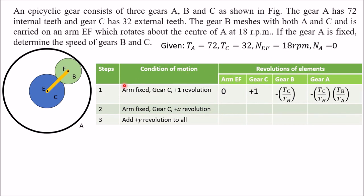We prepare a table with three steps: condition of motion and revolutions of elements. The first column must always be the arm. After that, start from one gear and write the meshing gear in the adjacent column. I started from C — C is in mesh with B, so next is gear B. B is in mesh with A, so next is gear A.